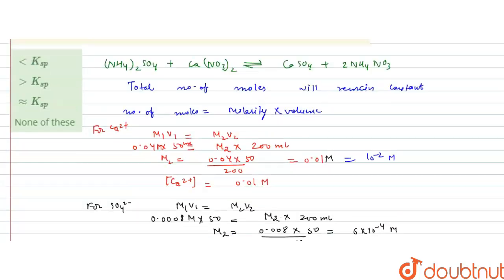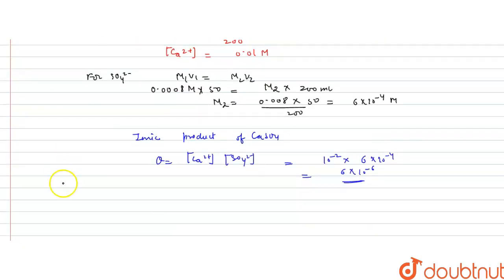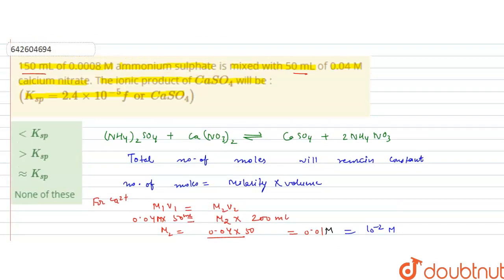We are given the solubility product Ksp as 2.4 × 10⁻⁵. The ionic product Q is 6 × 10⁻⁶. Since Q is in the order of 10⁻⁶ and Ksp is in the order of 10⁻⁵, the ionic product is less than Ksp. It means Q is less than Ksp — ionic product is less than the solubility product constant. So, the answer to this question is option A: less than Ksp. I hope you understood the solution. Thank you.